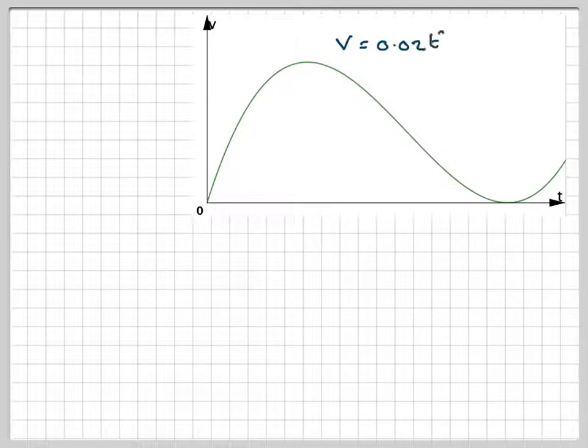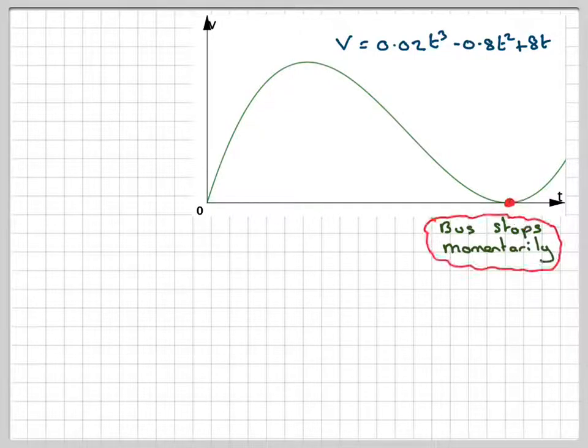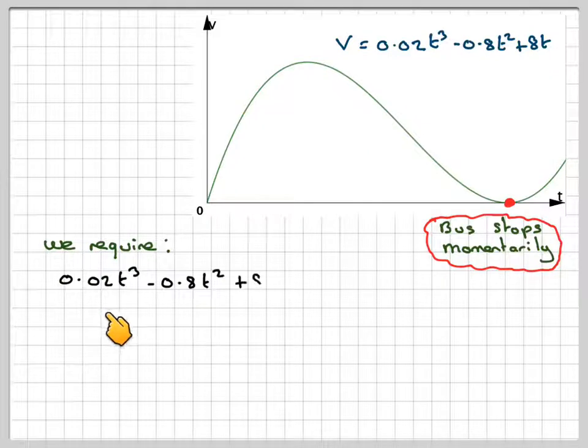So using the graph, the important point is this point here where it just touches the axis, because that's where the bus will stop momentarily. So we require this, where this is equal to 0. We need to solve 0.02t cubed minus 0.8t squared plus 8t equals 0.